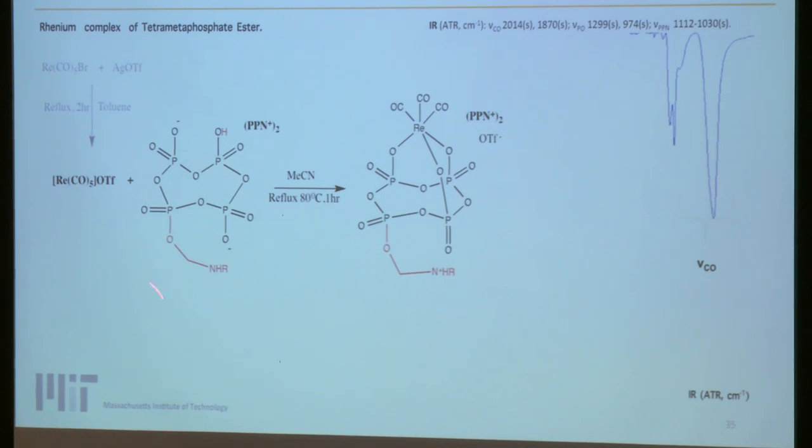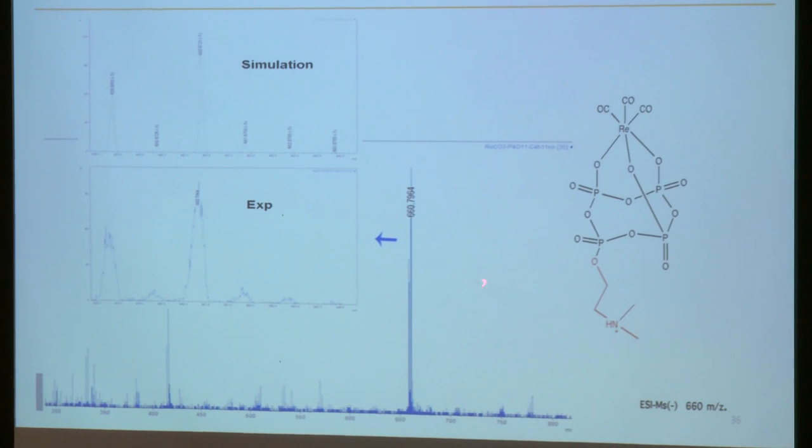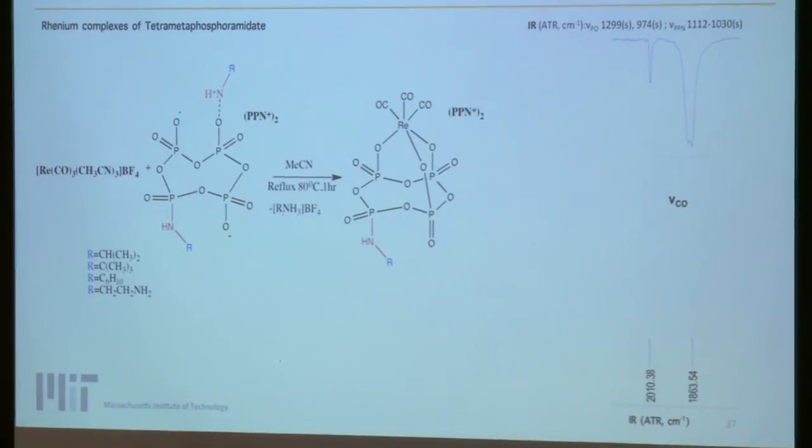Also, this is a general reaction. If you react tetramethaphosphate amidate with tricarbonyl precursor in acetonitrile reflux at 80 degrees for one hour yielding the complexes. The typical vibrational mode of the carbonyl were absorbed in IR. This mass spectra for one of the complex of the rhenium showing the molecular ion 6012.